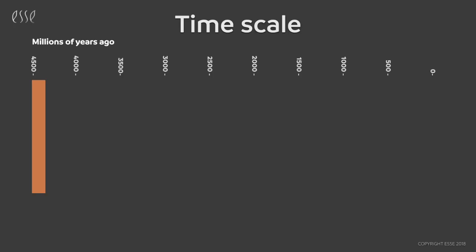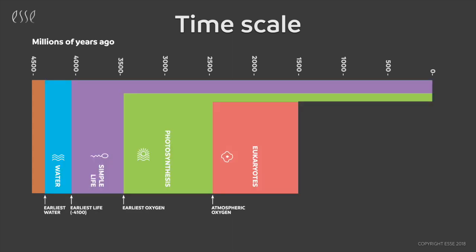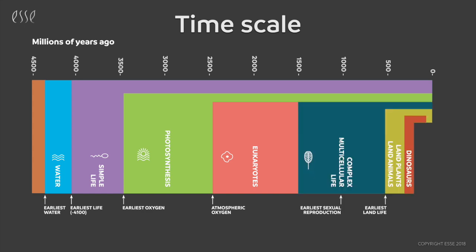Human beings all have a microbiome, as does every other organism on the planet, and that's because we evolved in a sea of microbes. Microbes were the only life on this planet for the first two and a half thousand million years of life on earth.